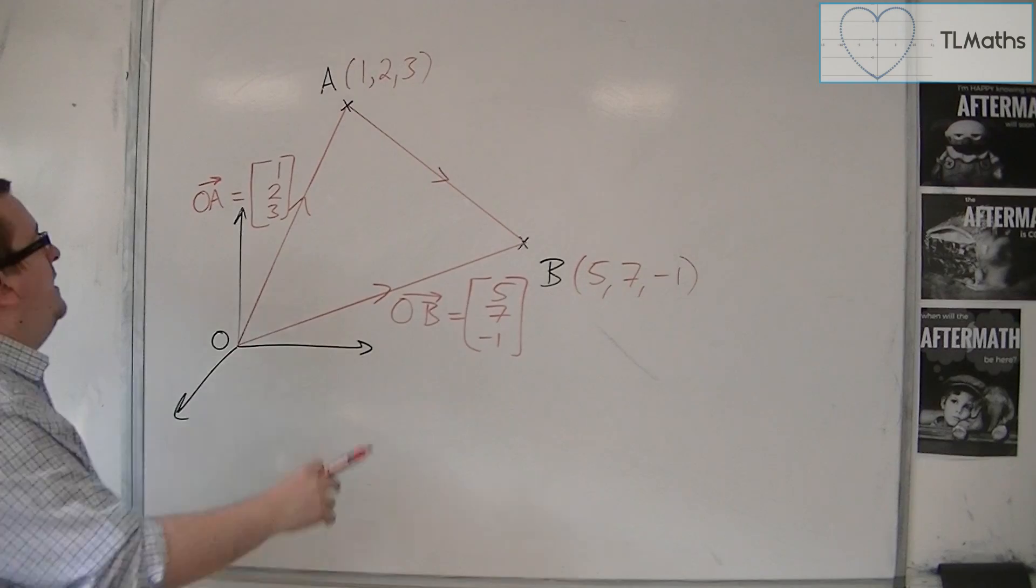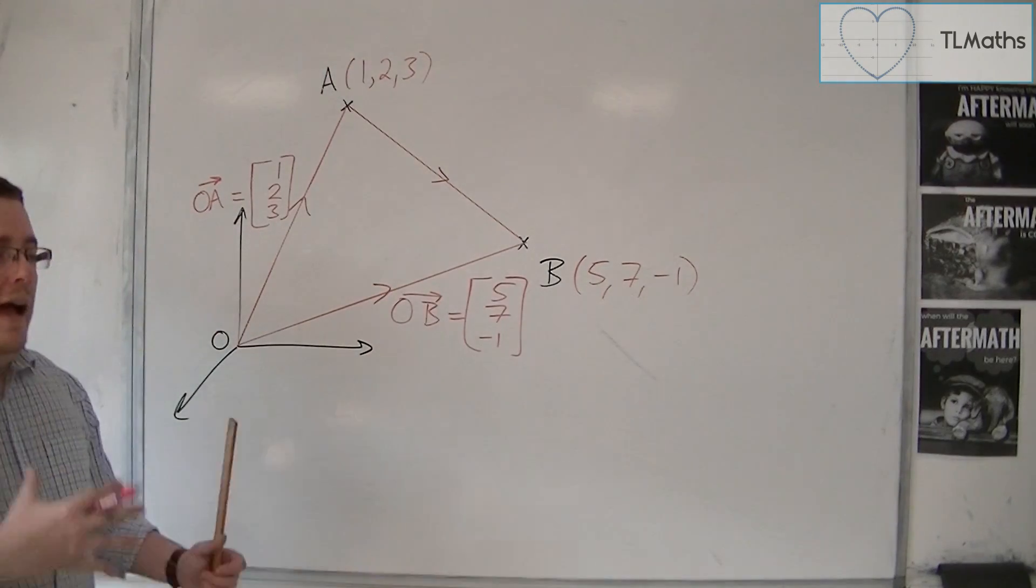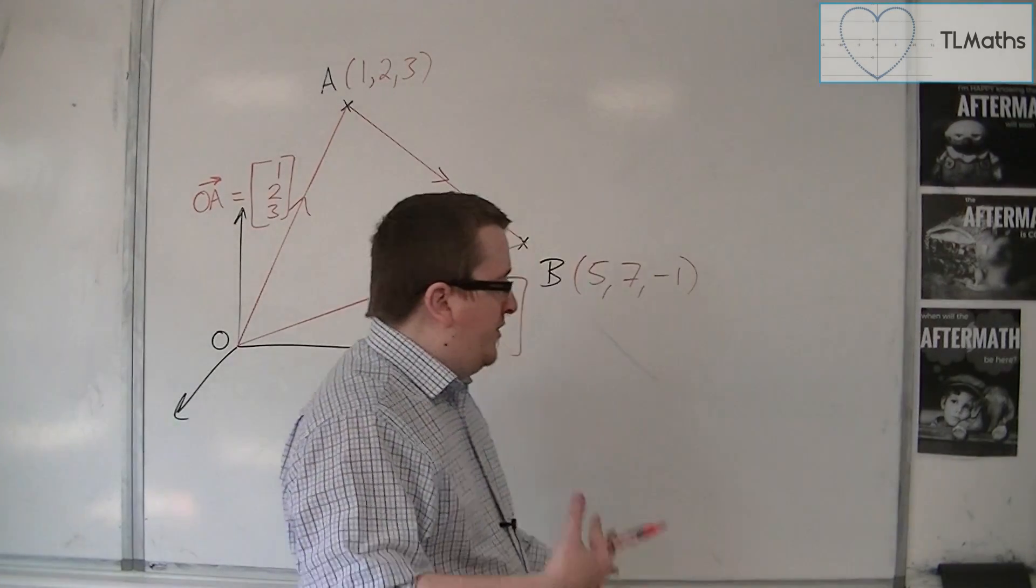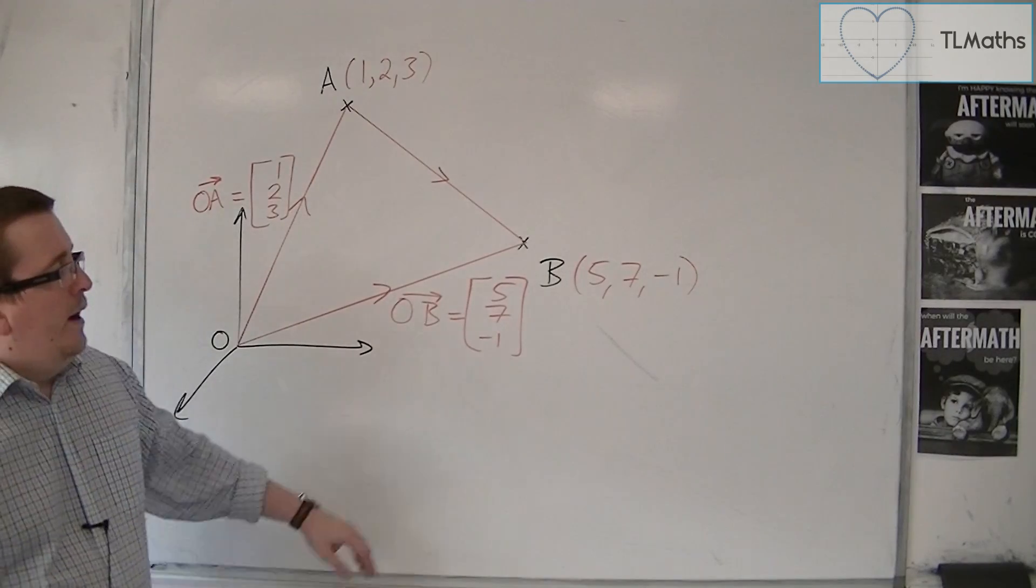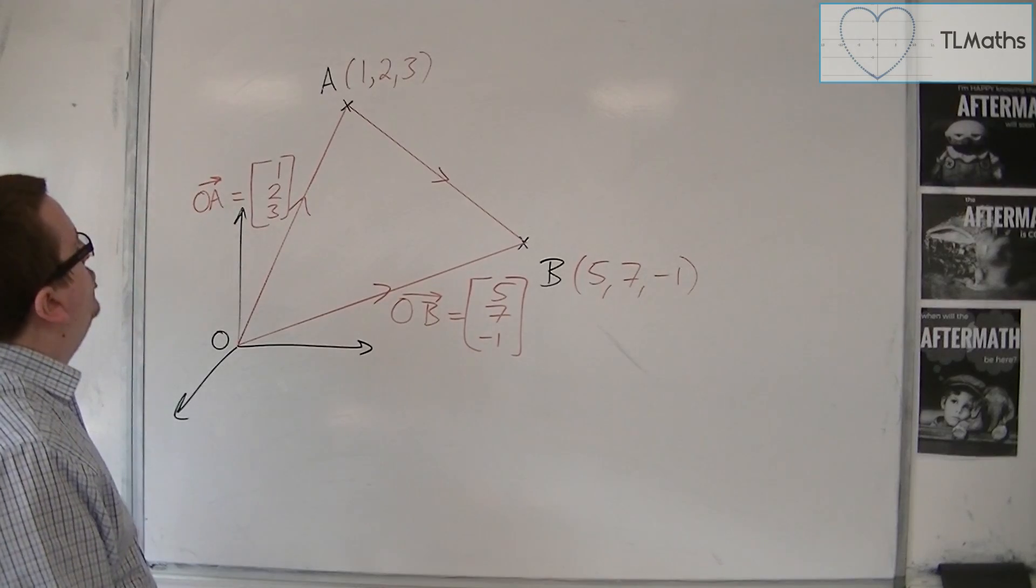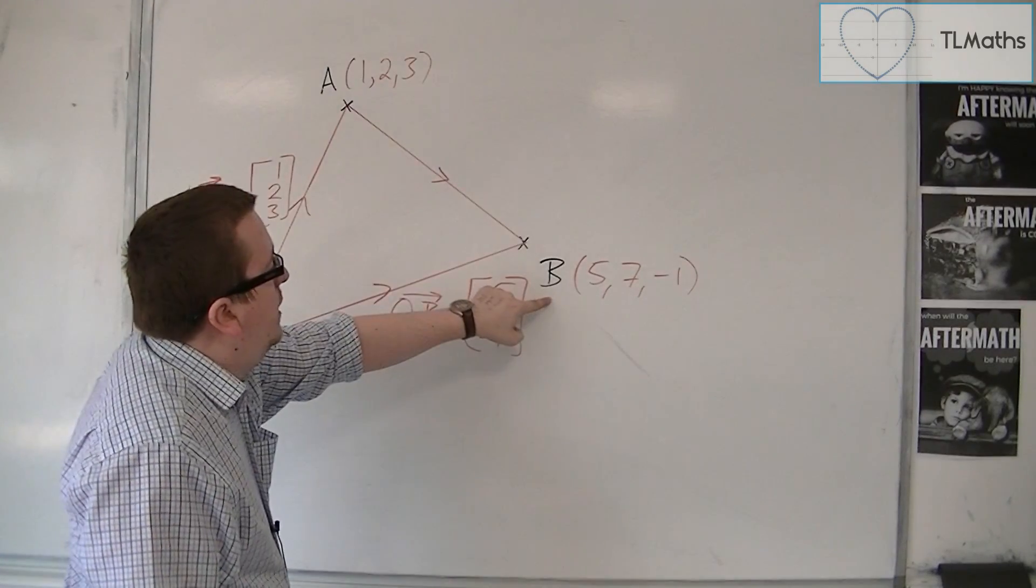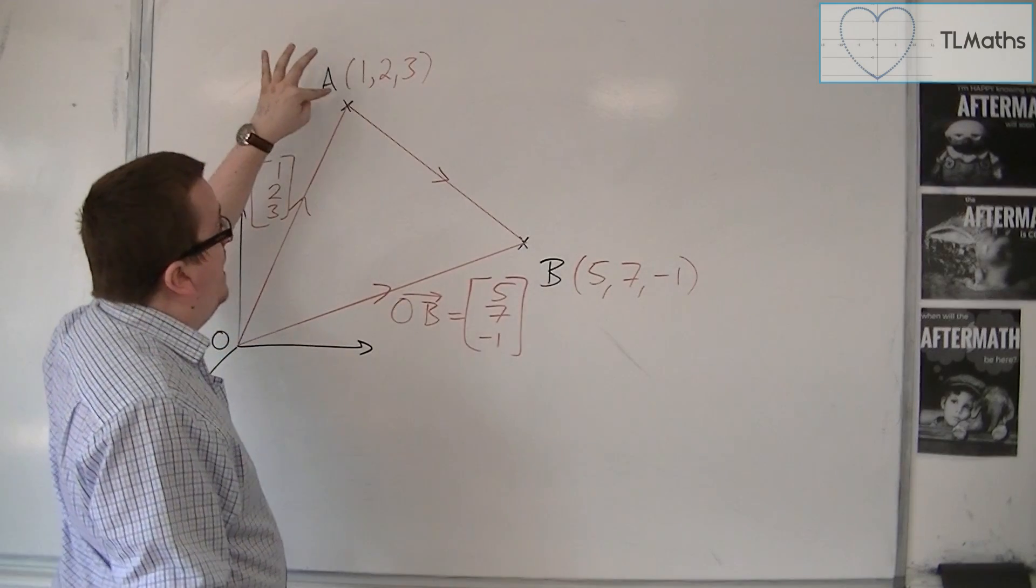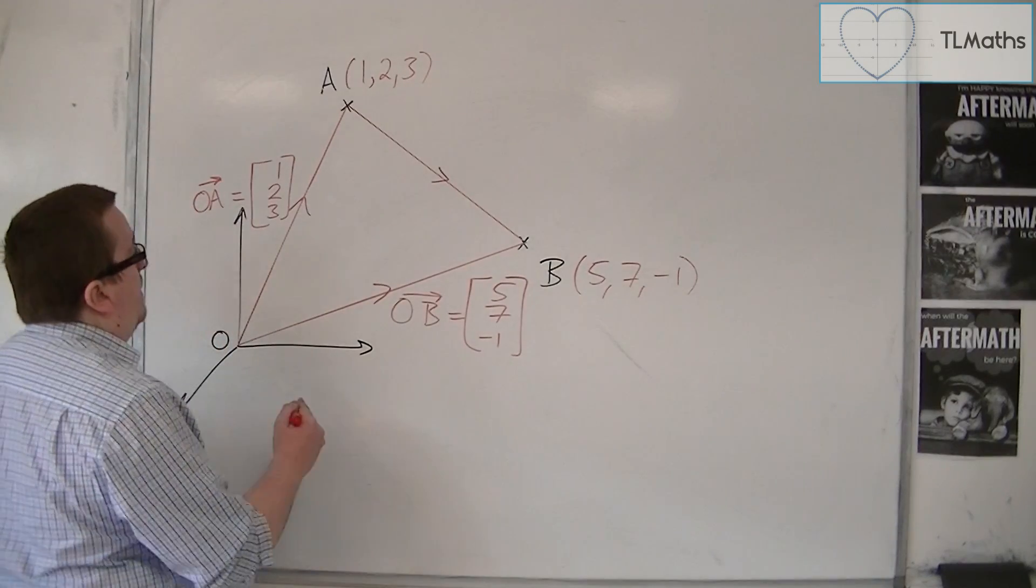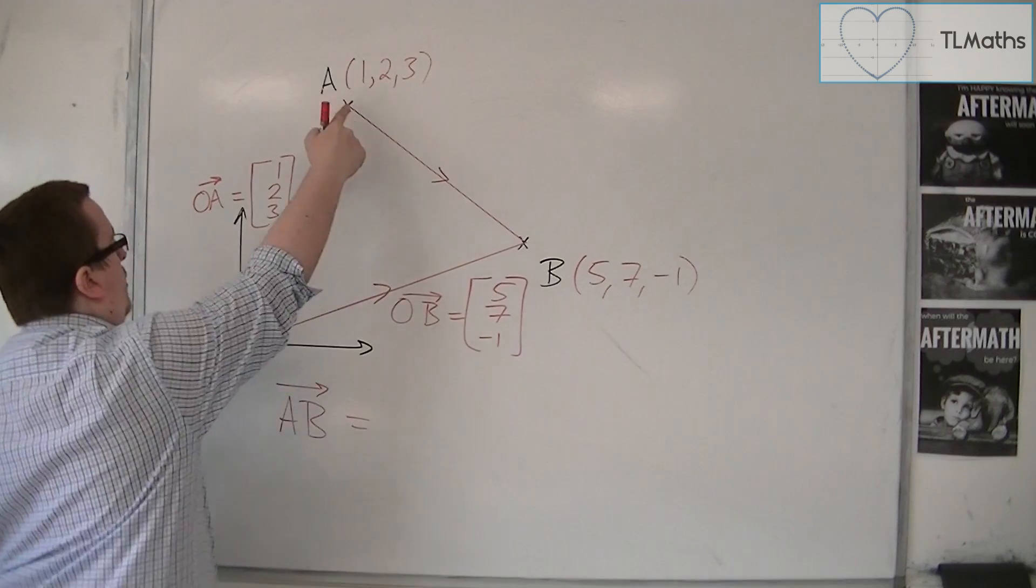Okay, so I can get from O to A, I can get from O to B, and then if we return to our original starting video in this topic of how we can get from one point to another using our vector knowledge, if I'm going to be travelling from A to B, what I could do is I could travel from A to O, and then from O to B.